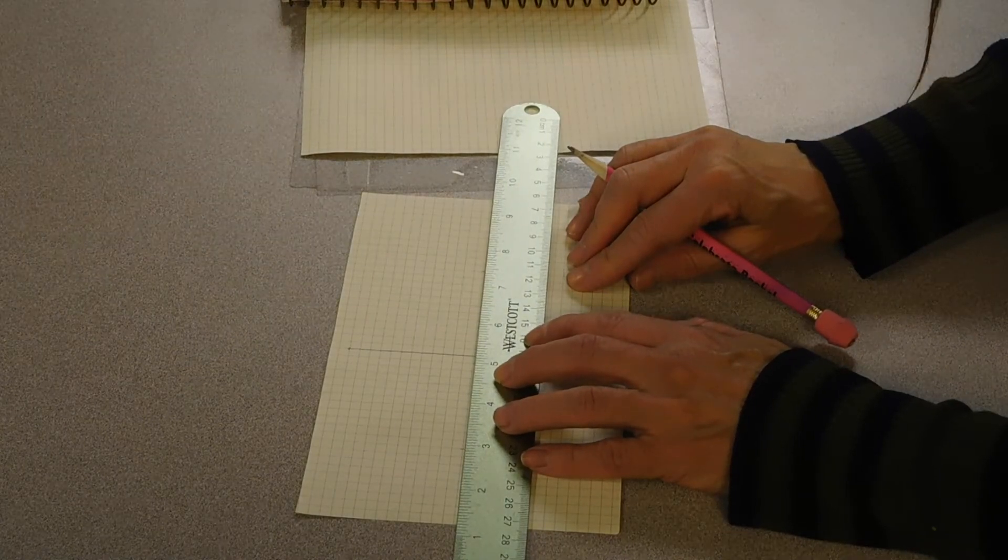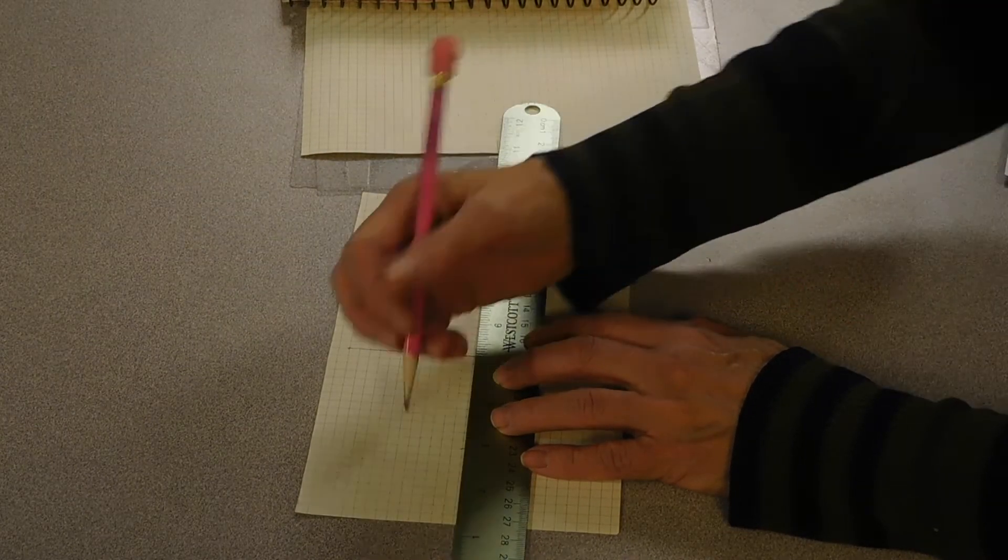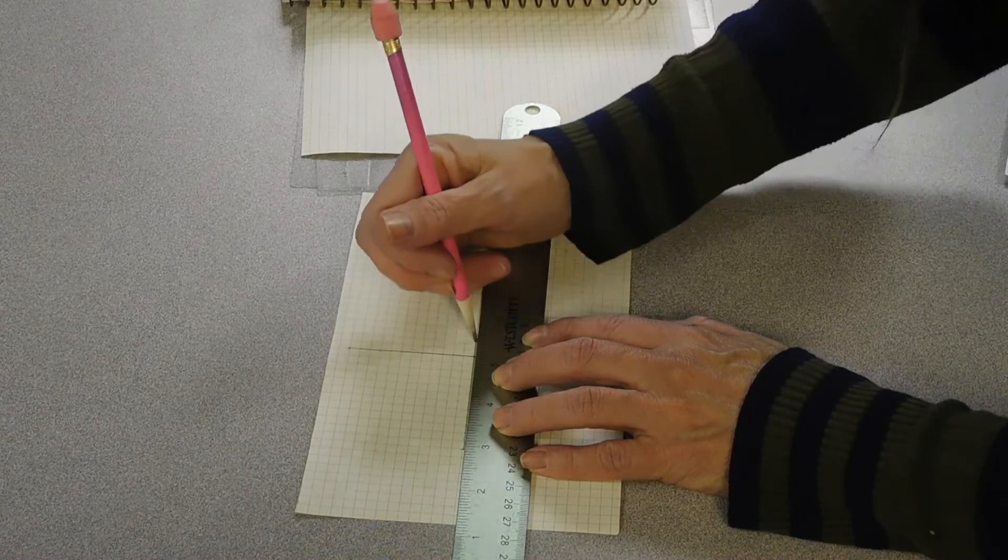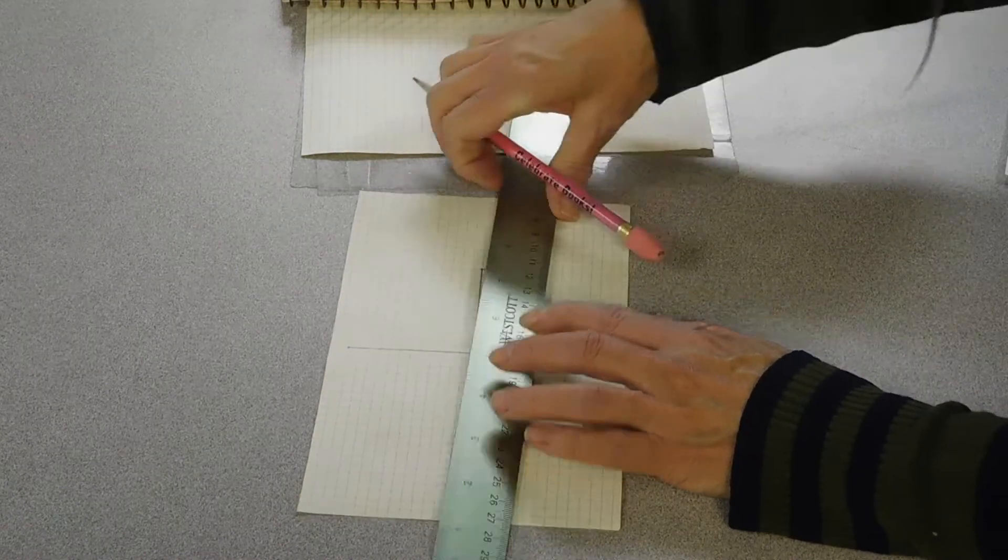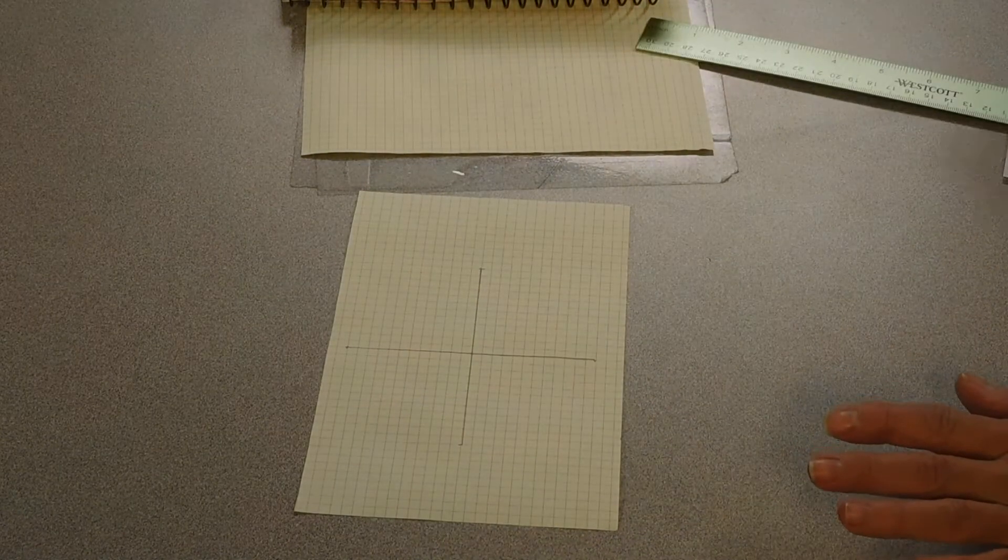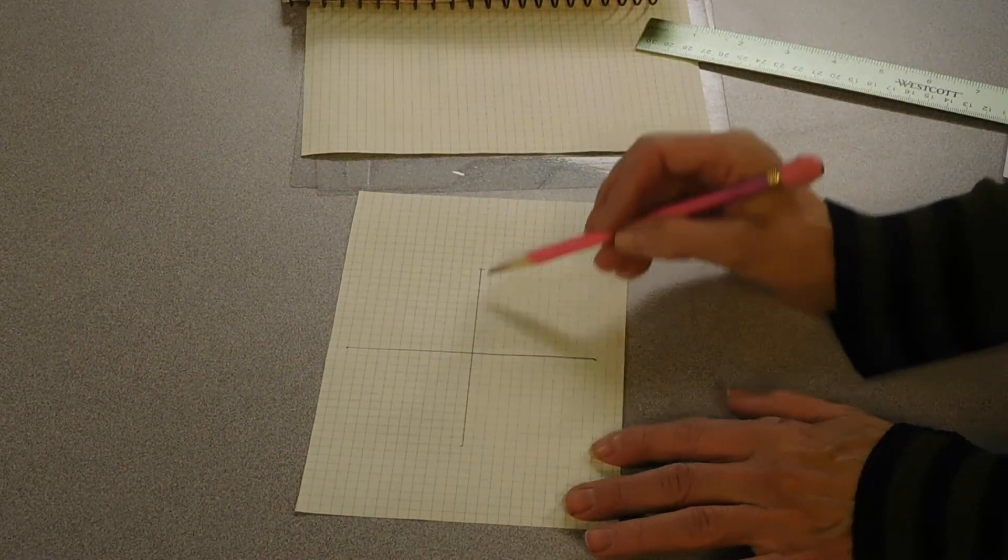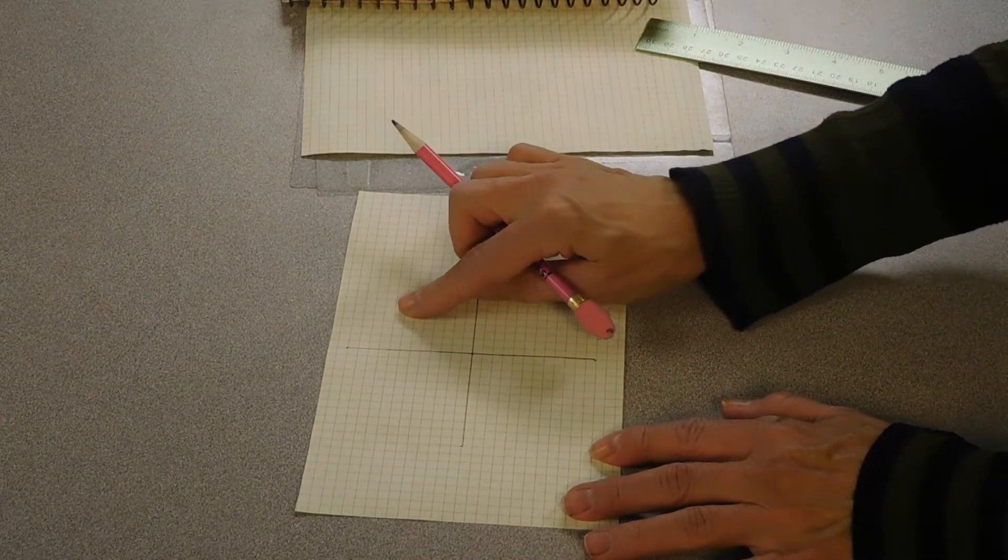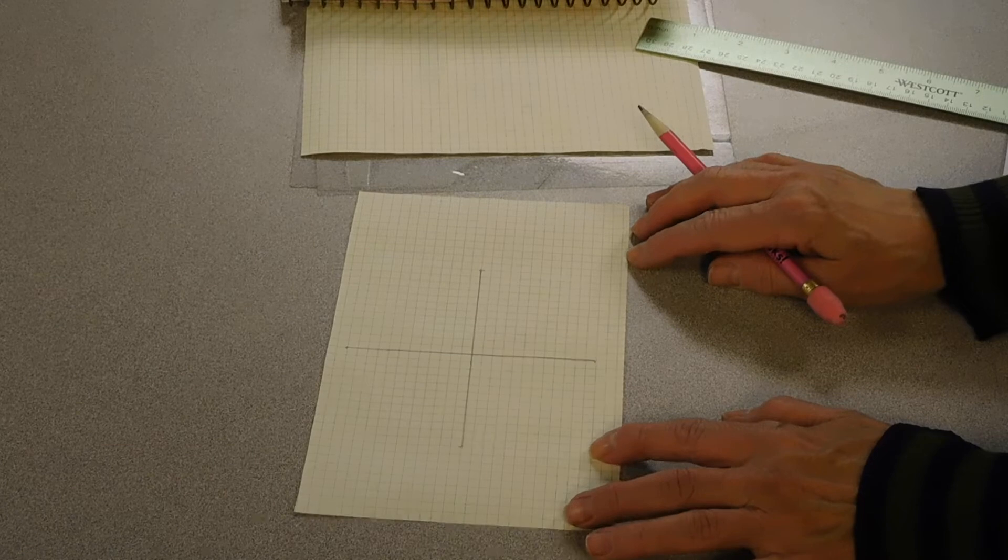And this will be my y-axis. Together they make a coordinate plane. It's basically a cross shape, and there are four quadrants in that shape.